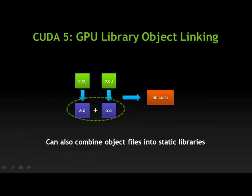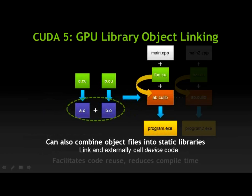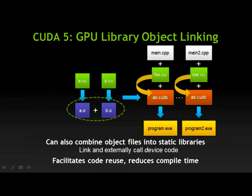Users can also combine object files into static libraries, link those libraries into an application. This facilitates better code reuse and significantly reduces compile time, particularly when working with large applications or a number of applications.